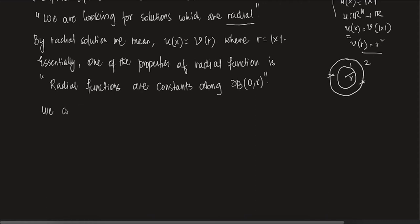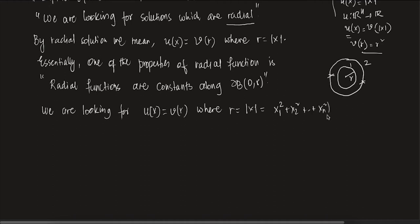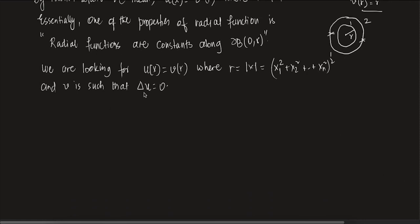We are looking for U(X) = V(R), where R = |X| = (X1^2 + X2^2 + ... + Xn^2)^(1/2). We choose V such that Laplacian of U equals 0. So we are assuming U is a solution of the Laplace equation, and since U equals V(R), we choose V to satisfy this condition.